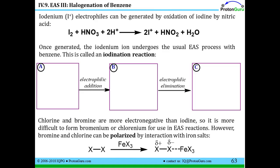The last few reactions I want to talk about for electrophilic aromatic substitution are halogenation reactions. The halogens are fluorine, chlorine, bromine, and iodine.